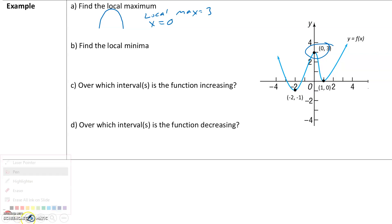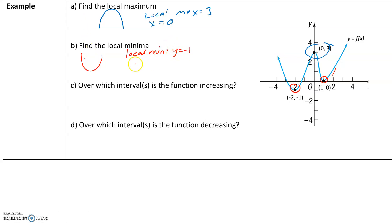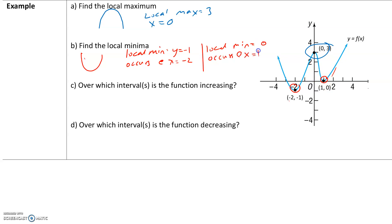Now let's find the local minima — minima means there are two of them. There are two turning points where the graph goes from decreasing to increasing, making a U shape — those give us our local minima. One local minimum is at y equals negative 1, and it occurs at x equals negative 2. Another local minimum is equal to 0 — the y value is 0 — and it occurs at x equals 1.